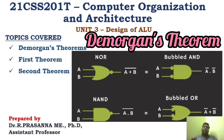This is a very simple but very important concept in unit 3. We are going to see De Morgan's theorem and there are two theorems — theorem 1 and theorem 2. You will see the theorem, the explanation of it, and the proof of that particular theorem.